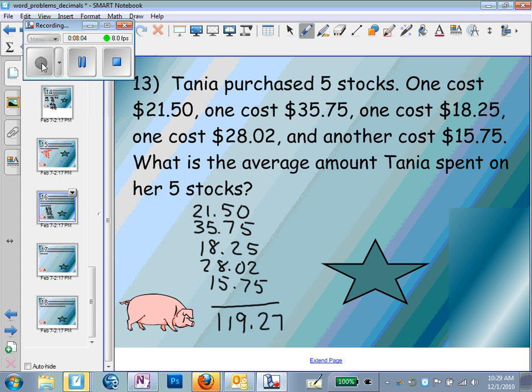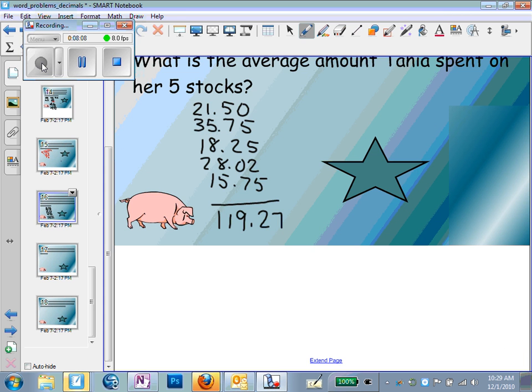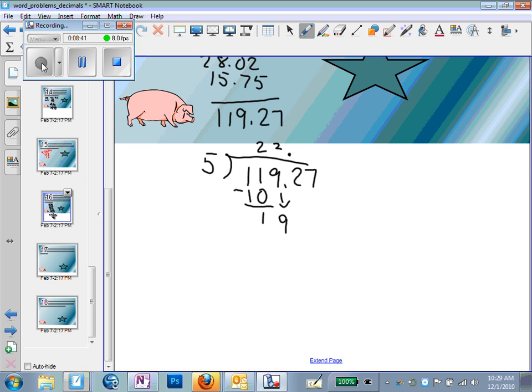So that's my sum or total amount spent on my stocks. In order to figure out my average, I'm going to divide by how many stocks I have. So I'm going to divide 5 into $119.27. I know that when I divide with decimals, I want to make sure I line my decimals up on top of each other. 5 goes into 11 twice with a remainder of 1. Bring the 9 down. 5 goes into 19 three times with a remainder of 4. Bring the 2 down. 5 goes into 42 eight times. That's 40, with a remainder of 2. Bring the 7 down.